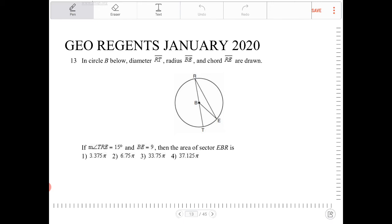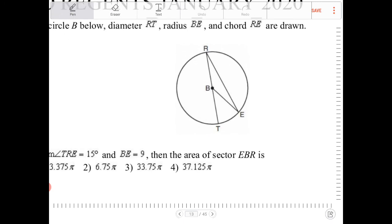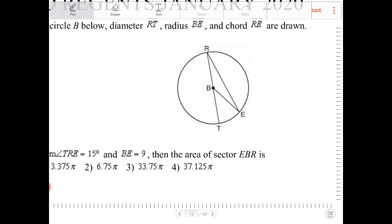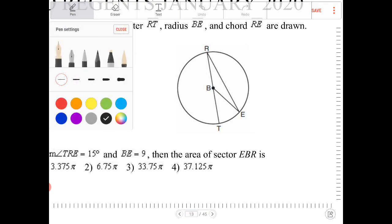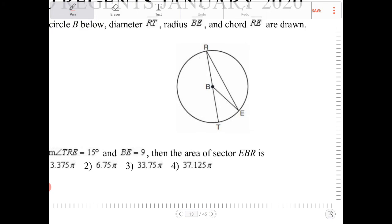If angle TRE is 15 degrees, so TRE, this is 15 degrees. I'm going to use a different color. So this is 15 degrees, and BE is 9. Then the area of sector EBR, EBR is...